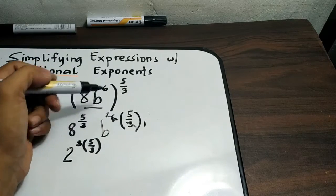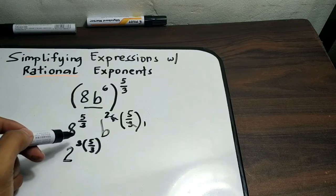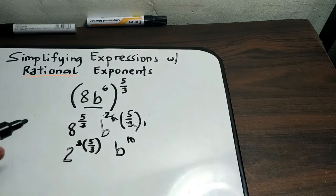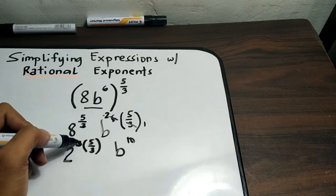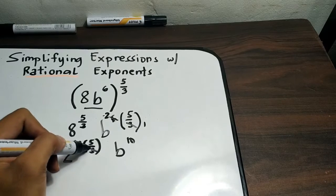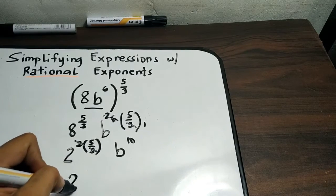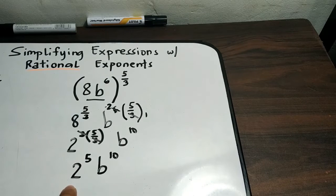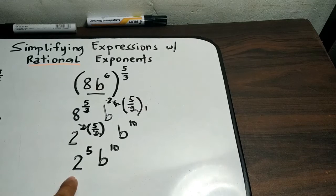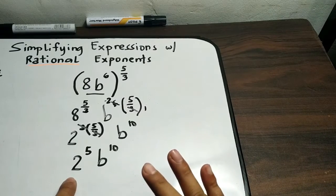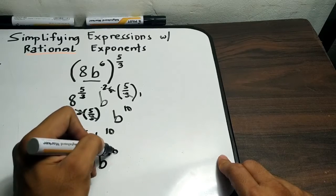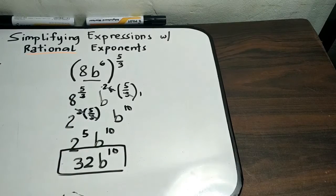For the base b, we have b raised to 6 times 5 over 3. Simplify 6 and 3 — 6 divided by 3 is 2 — so you get b raised to 2 times 5, which equals b raised to 10. Now 2 raised to 5 equals 2 × 2 × 2 × 2 × 2 = 32. So the final answer for example 2 is 32b raised to 10.